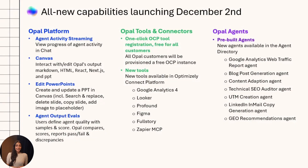So that covers our December launch. We talked about new Optimizely connectors like GA4, new out-of-the-box agents in the agent directory, how to combine them into agentic workflows, and then iterating on artifacts using Canvas. And finally, we talked about assessing output quality. If you want to learn more about how Optimizely Opal can work for your marketing team, reach out for a demo.